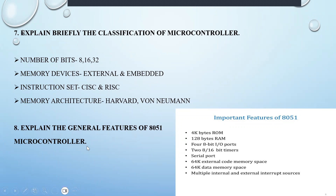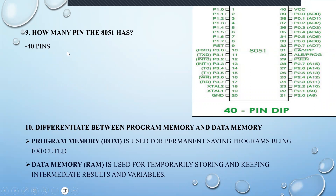Explain the general features of the 8051 microcontroller. It has ROM and RAM: 4K bytes of ROM and 128 bytes of RAM. It has four 8-bit input-output ports. It has two 8-bit or 16-bit timers. It has a serial port and external code memory space to store code and data separately. It also has multiple internal and external interrupt sources to recognize high-priority and low-priority tasks. How many pins are there in 8051? Yes — 40 pins. You can see what all those 40 pins belong to.